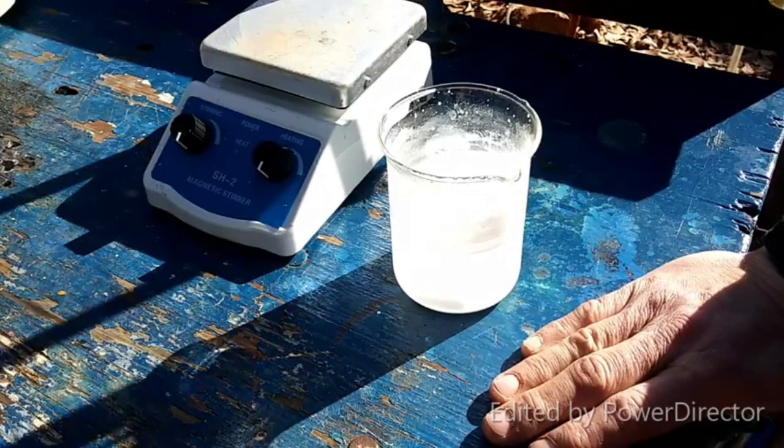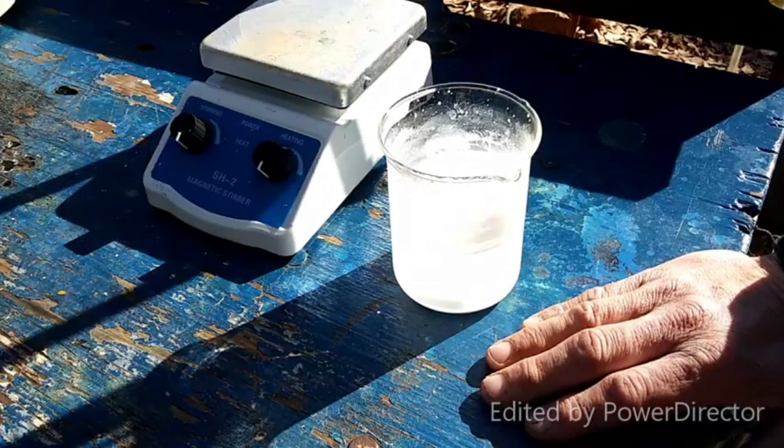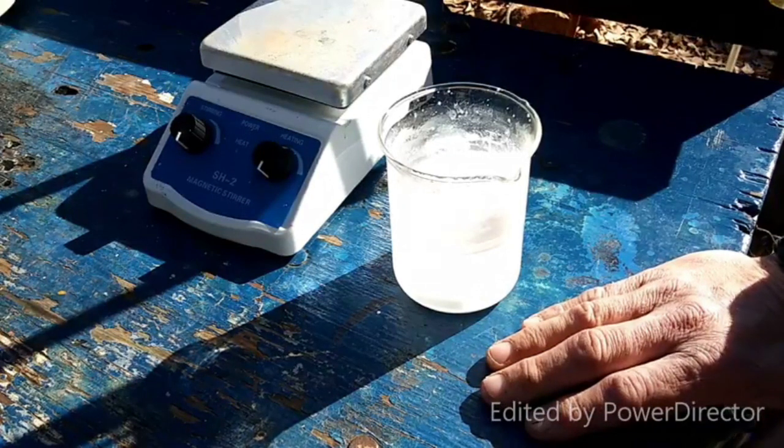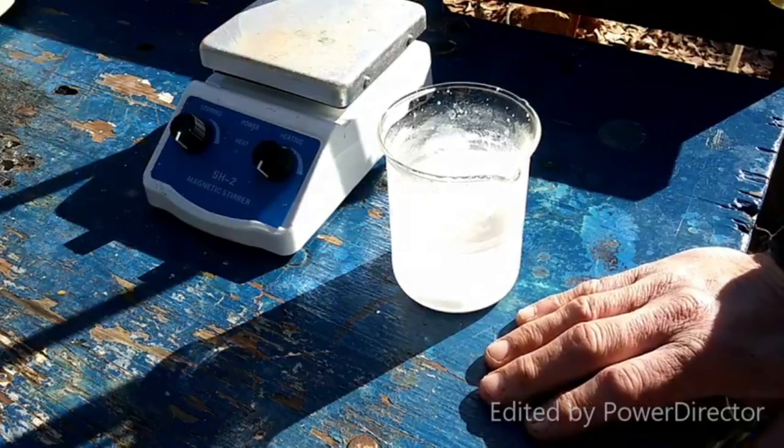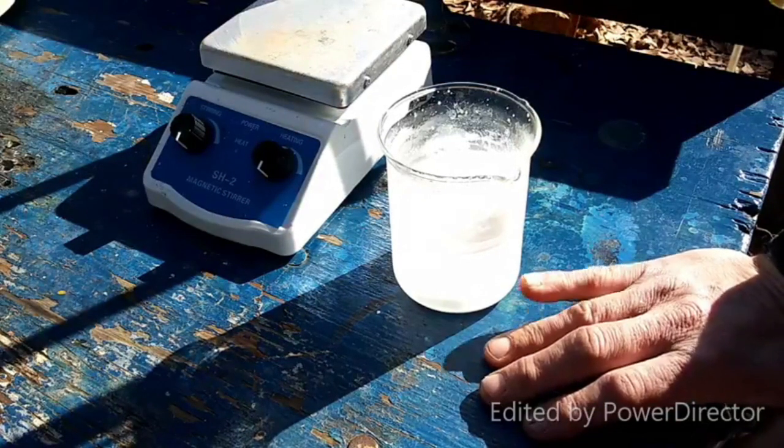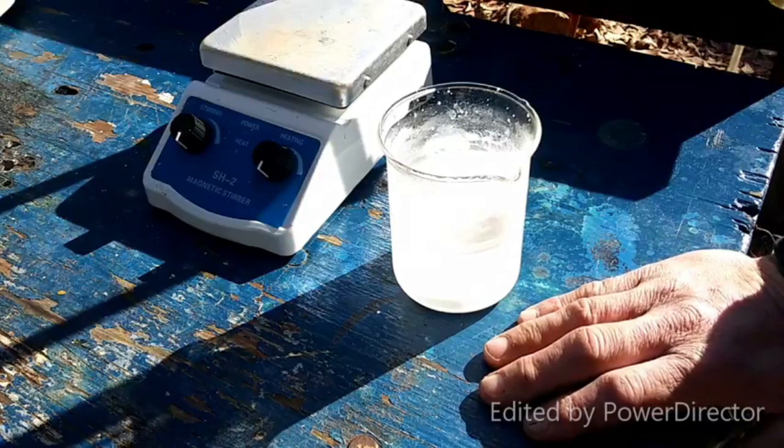So anyway, barium hydroxide reacts pretty readily with CO2 in the air and because this has been heating and stirring out in the open for hours and hours, I would imagine that pretty much what we're looking, well all of what we're looking at here is barium carbonate at this point. So now the thing is to separate this from the barium carbonate.